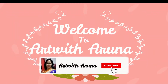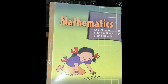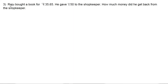Hello friends, welcome to Art with Aruna. Today we are going to solve NCERT Class 6 Chapter 8 Exercise 8.6, question number 3. The third question of this exercise is: Raju bought a book for rupees 35.65. He gave rupees 50 to the shopkeeper. How much money did he get back from the shopkeeper?